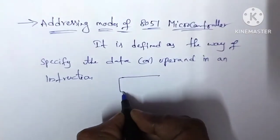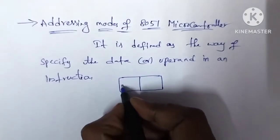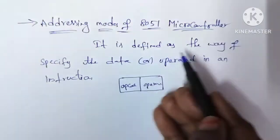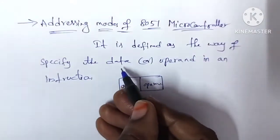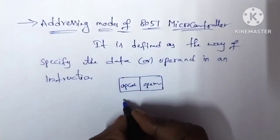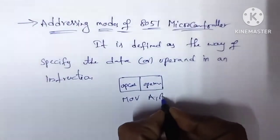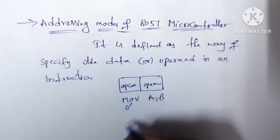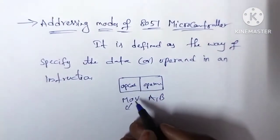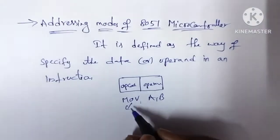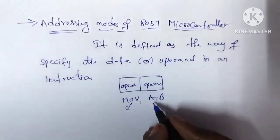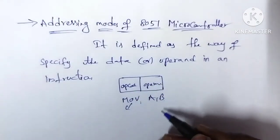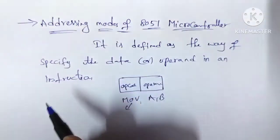An instruction consists of two parts: opcode and operand. The opcode means whatever operation is to be performed. For example, in 'MOV A, B', MOV is the opcode and A, B are the operands. The way of specifying the data or operand in an instruction is the addressing mode.